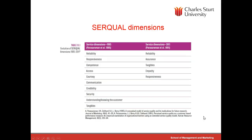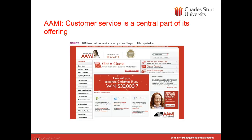Here are some of the Servqual dimensions, which include things like reliability, assurance — which is really responsiveness and competence — the tangible aspect of services, having empathy with the customer, and responsiveness. These are the dimensions that are really managed by the customer service function today. Many organisations, particularly in insurance, like AMI, also have customer service as a central part of their offering, including additional services such as roadside assistance.